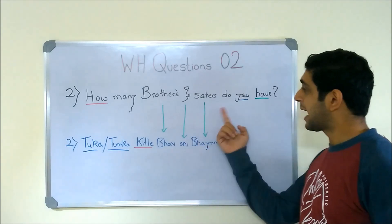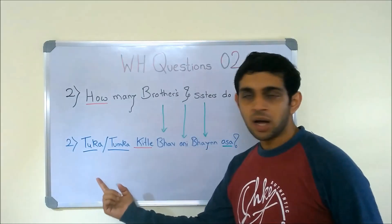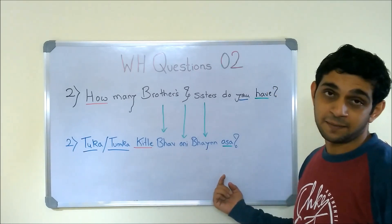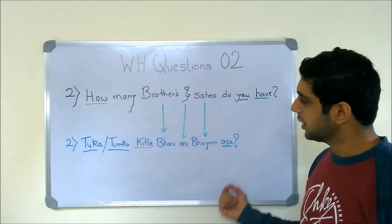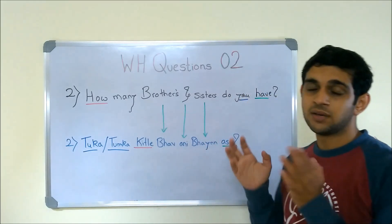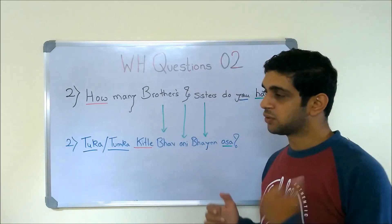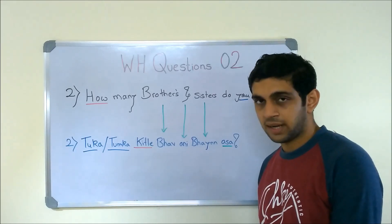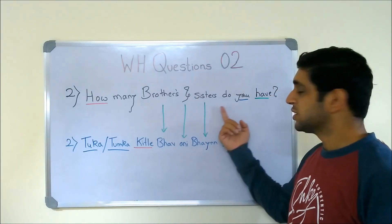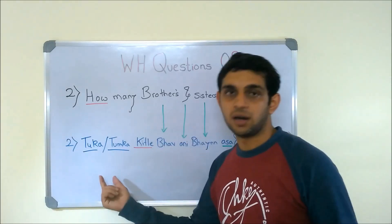How many brothers and sisters do you have? TUKA KITLE BHAAV ANI BHAIN AASA. TUKA and TUMKA here mean 'to you' — you may have been confused. You know TUMI is 'you', but here in this sentence we have 'DO YOU', so that is when we say TUKA.